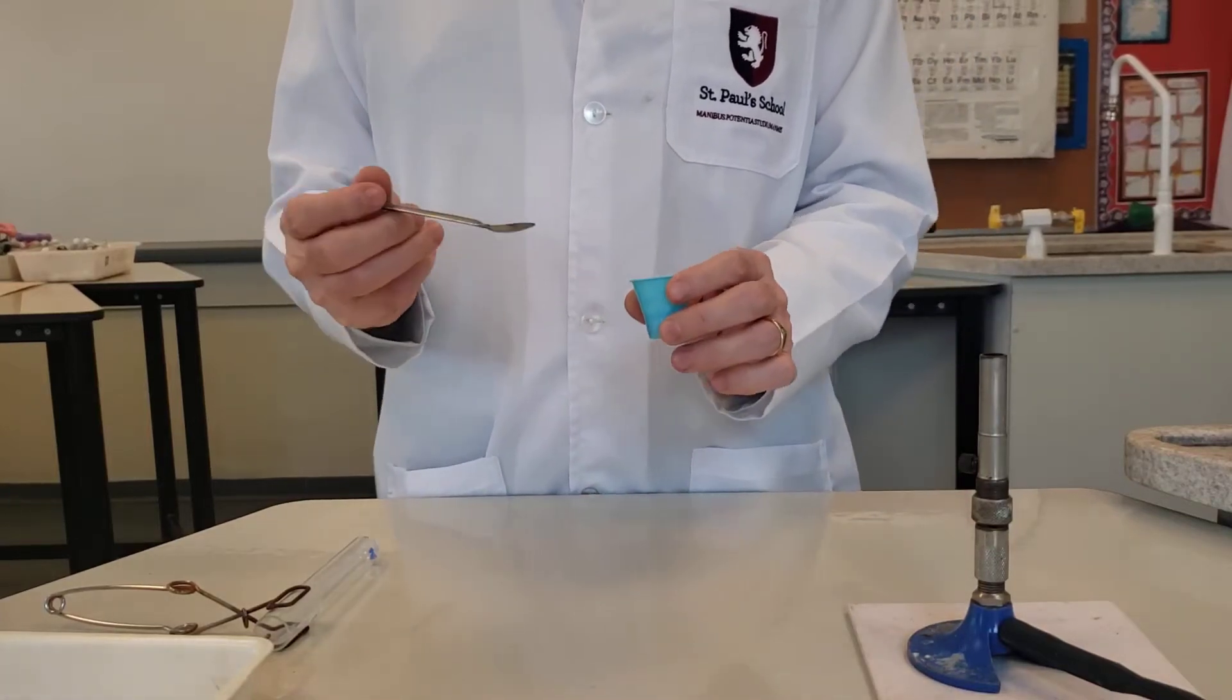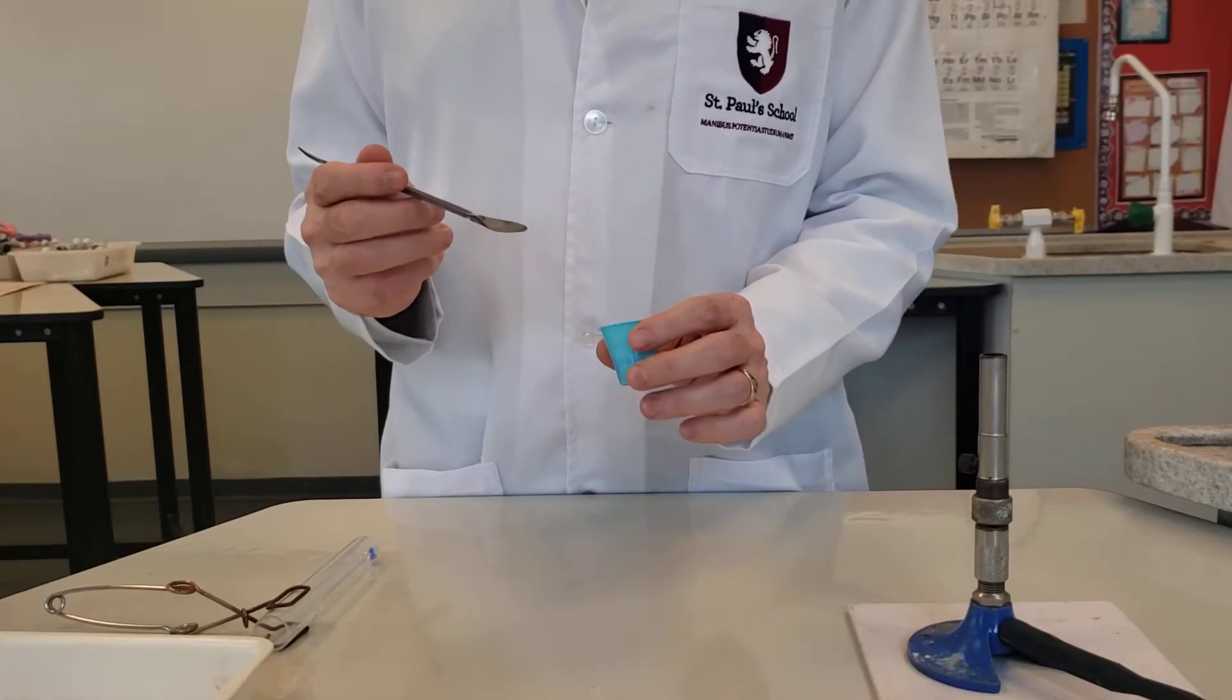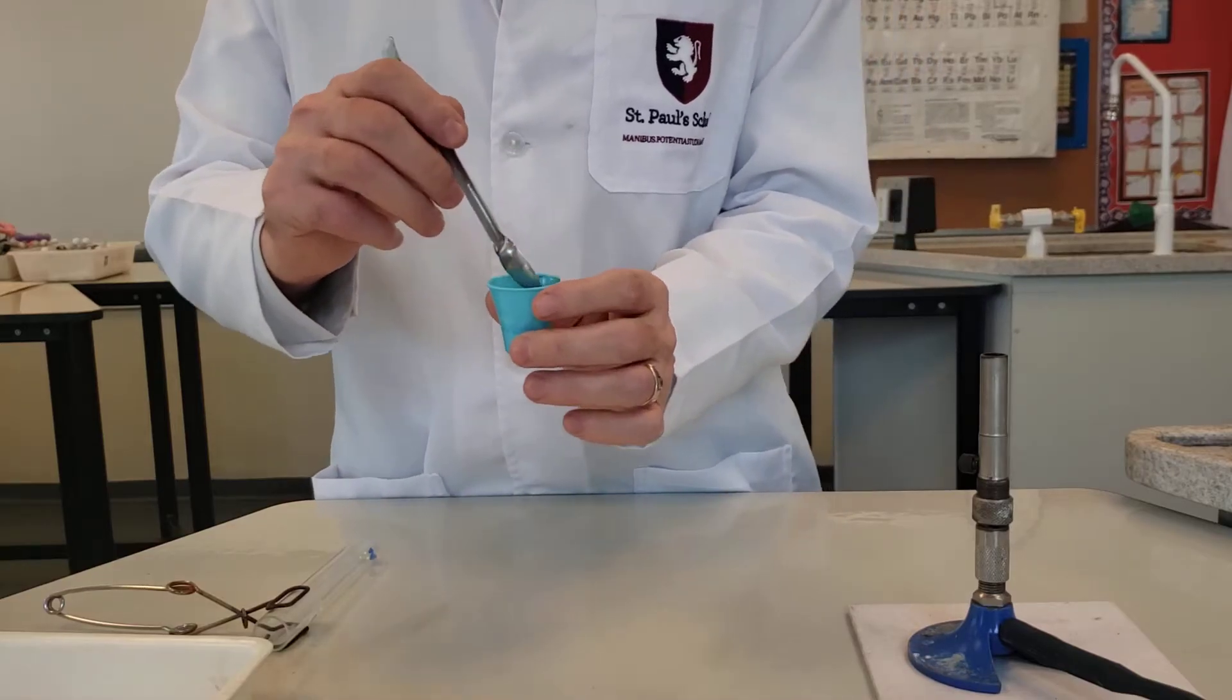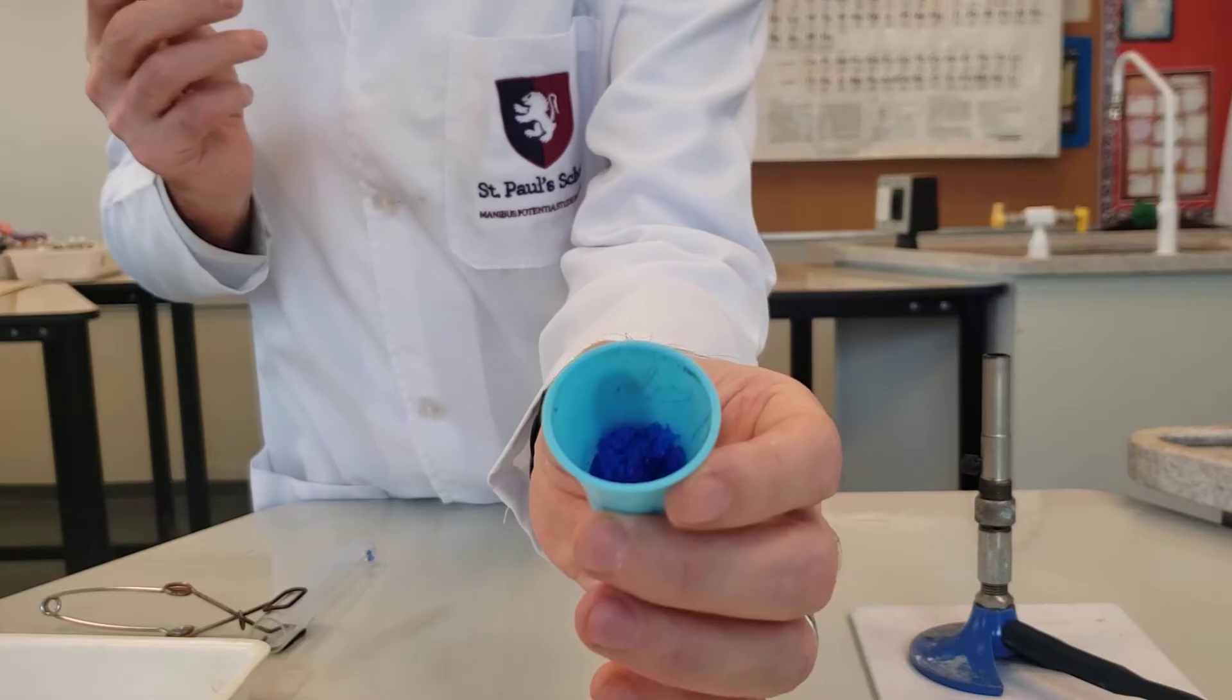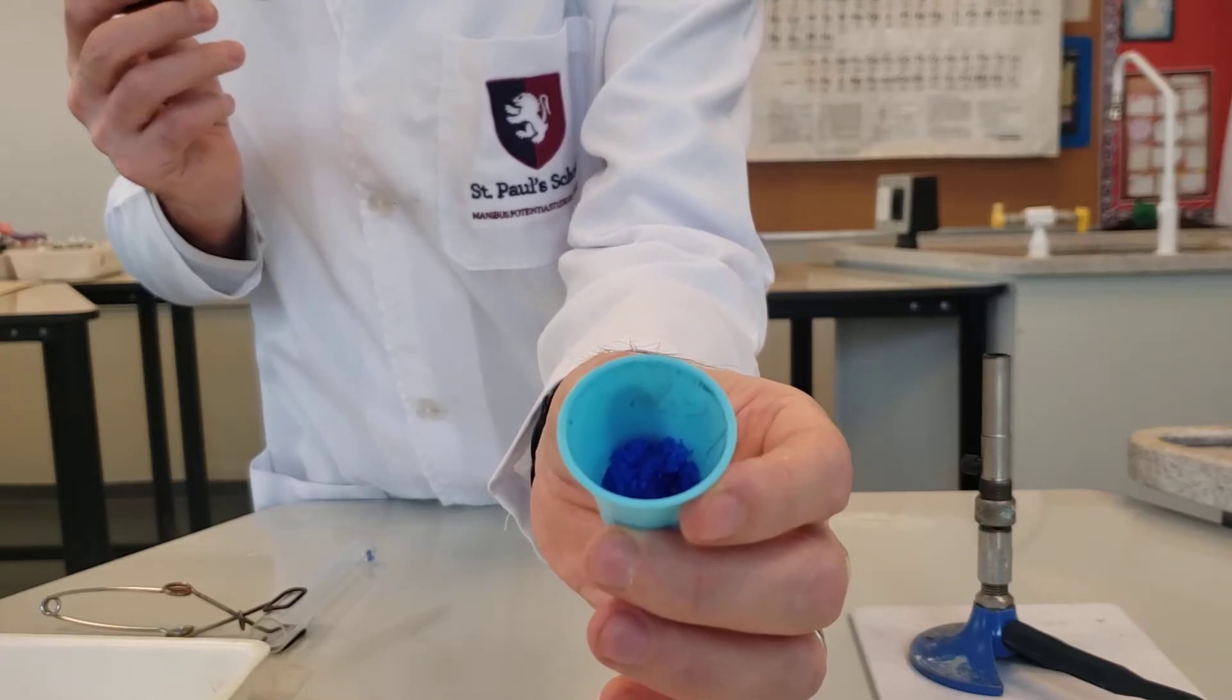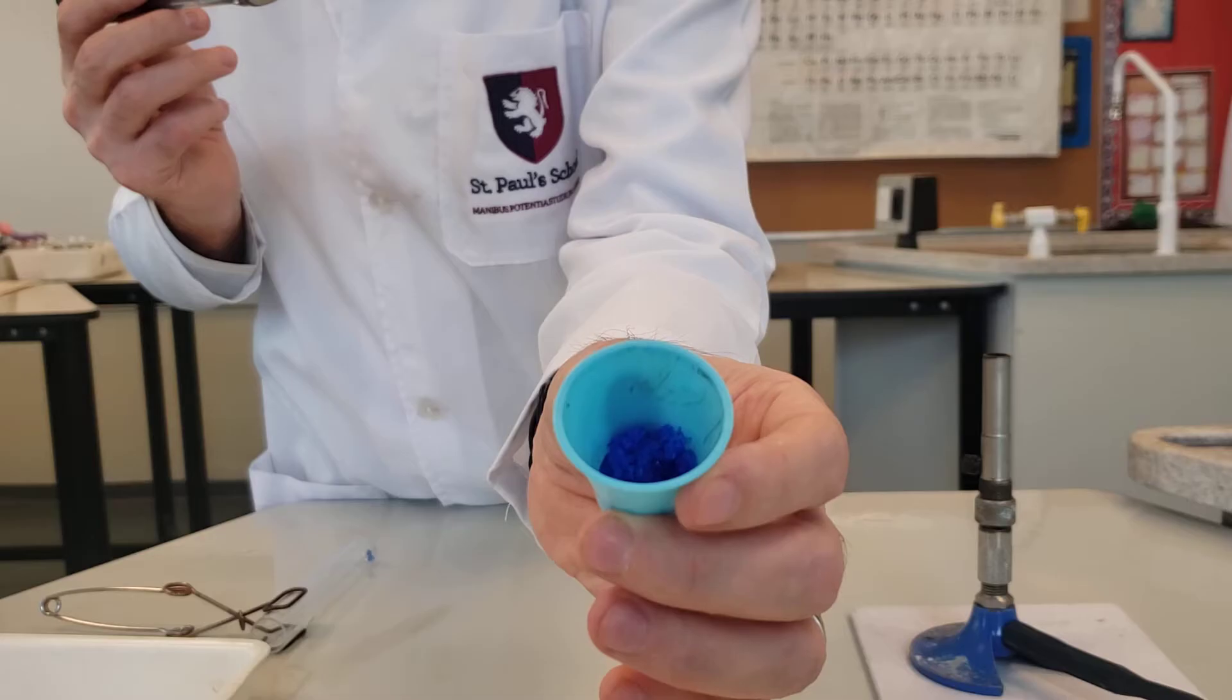Now I'm going to show the thermal decomposition of copper nitrate. You can see copper nitrate is a beautiful deep blue hydrated crystal, hydrated because there's quite a bit of water inside the crystal.